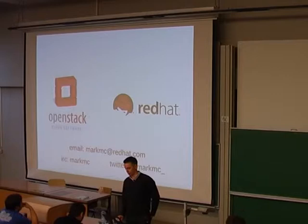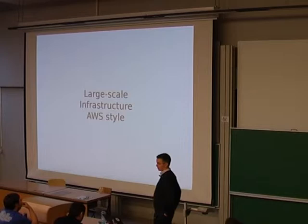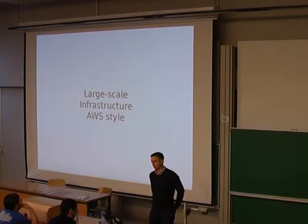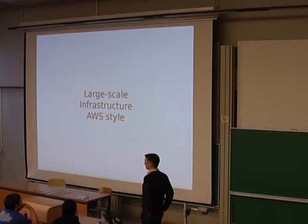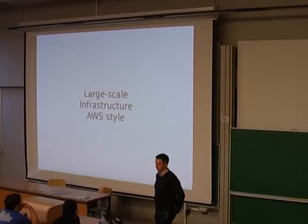OpenStack is trying to build software for large-scale infrastructure as a service — more specifically, AWS-style cloud. Everybody wants to call their service cloud, but what we're really trying to do with OpenStack is AWS-style cloud: EC2, EBS, S3, VPC — that's basically what we're trying to build, that style of service.